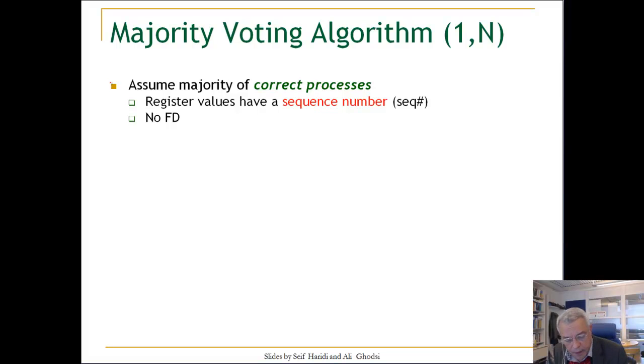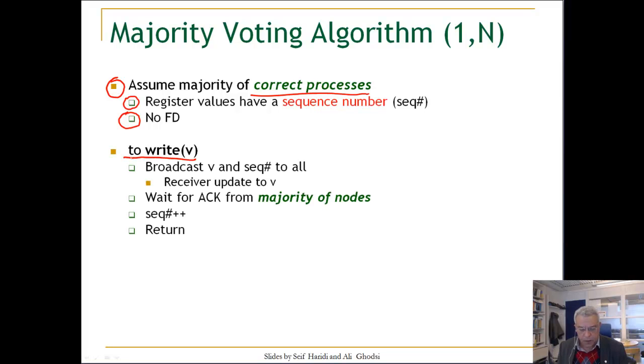Let's look now at the algorithm, a majority voting algorithm. We assume that the majority of the nodes or processes are correct. If that is not satisfied, we will violate the liveness property, which is the termination property. All register values will be the value plus a sequence number. We are not going to use any failure detectors. Here is the algorithm for write. To perform a write operation on the register, you broadcast the value V via best-effort broadcast, and the sequence number to all nodes. Every node delivering the broadcast will update the value to V and store the most recent sequence number. The initiating node waits for acknowledgment from a majority of nodes. Once it completed this step, it increases the sequence number and returns.